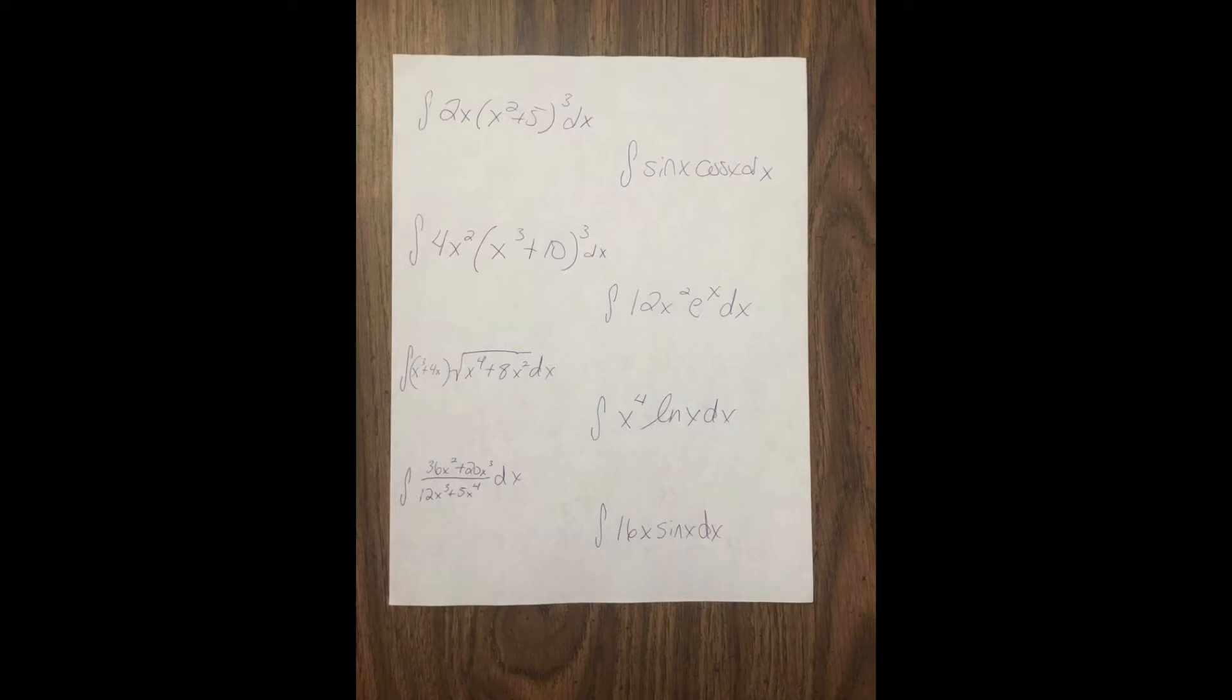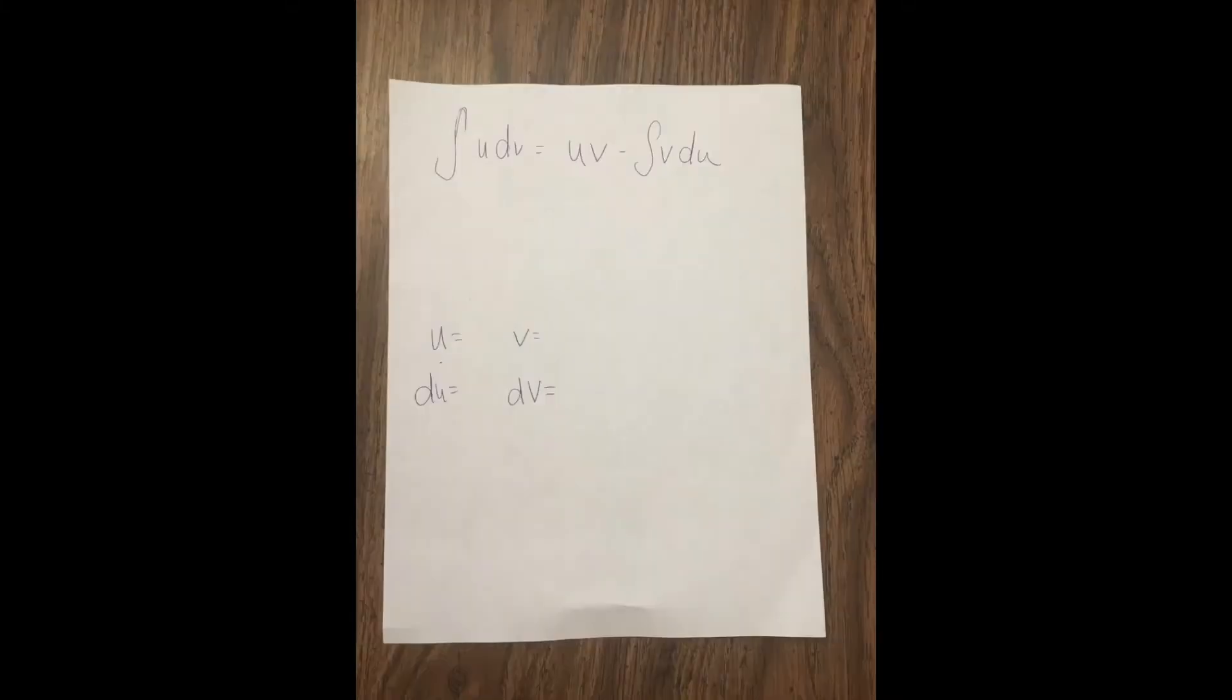So let's do this. This is what we do for integration by parts. So we have the integral of u dv, that's the problem. And to solve that, we do uv minus the integral of v du.